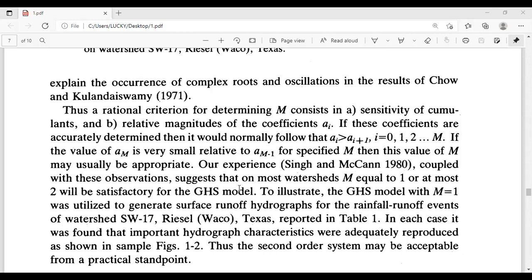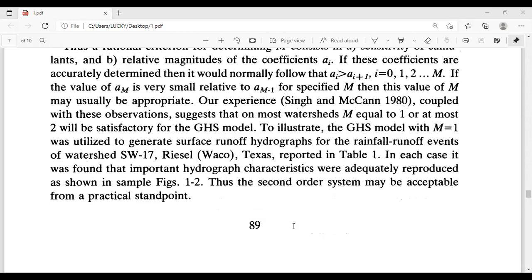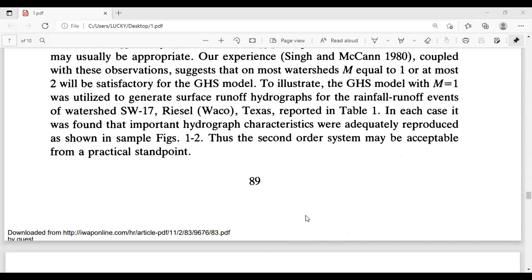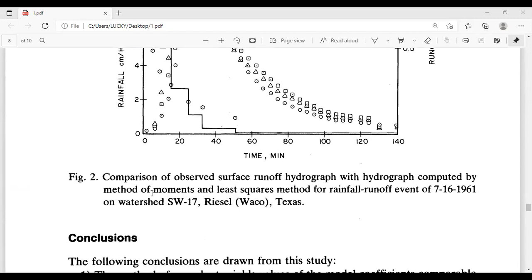To illustrate, the GHS model with M equals 1 was utilized to generate surface runoff hydrographs for the rainfall runoff events of watershed SW-17, Texas as reported in table 1. In each case, it was found that important hydrograph characteristics were adequately reproduced as shown in sample Figure 1-2. Thus, the second-order system may be acceptable from a practical standpoint. This is the comparison of observed surface runoff hydrograph with hydrograph computed by methods of moments and least squares method for rainfall runoff event of watershed in Texas.